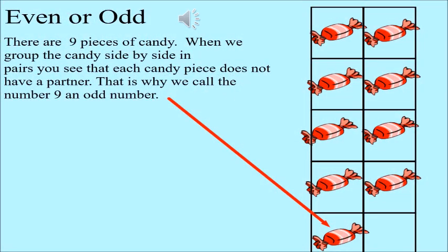Let us see this example. There are 9 candies in the example. When we group the candies side by side, we see that they are formed in pairs except for the last one. The last candy does not have a pair. So, it is an odd number. That is why we call 9 as an odd number.